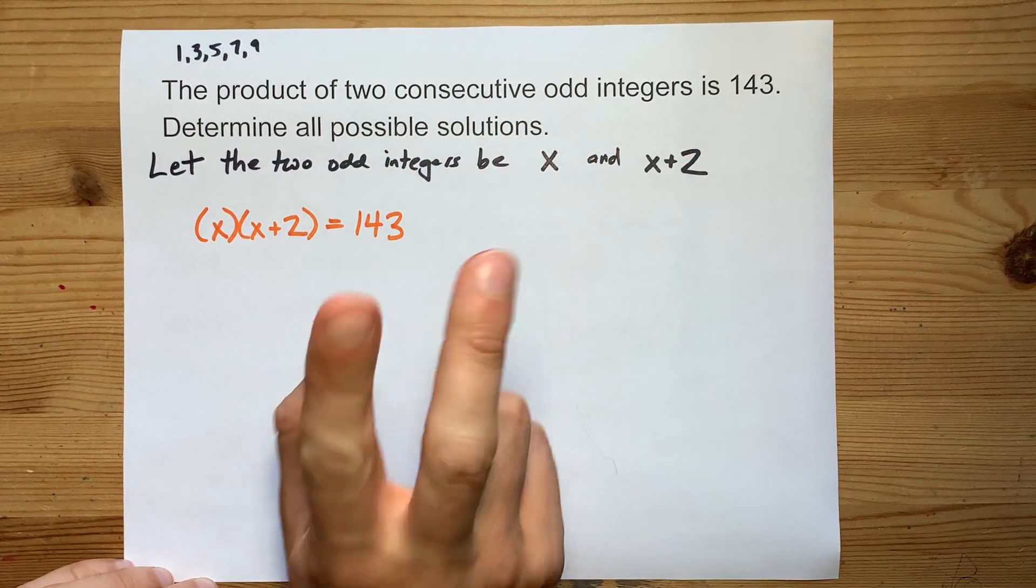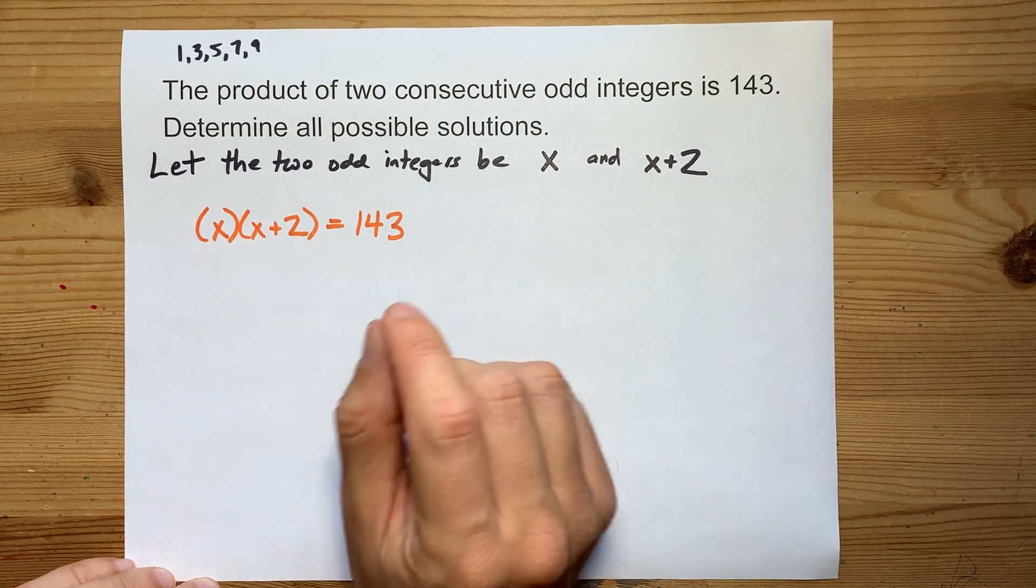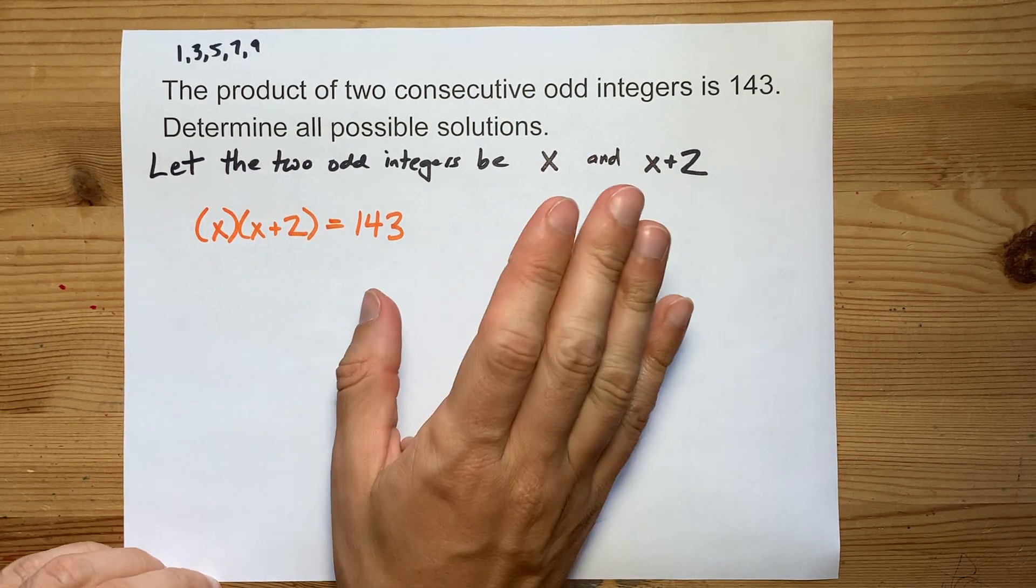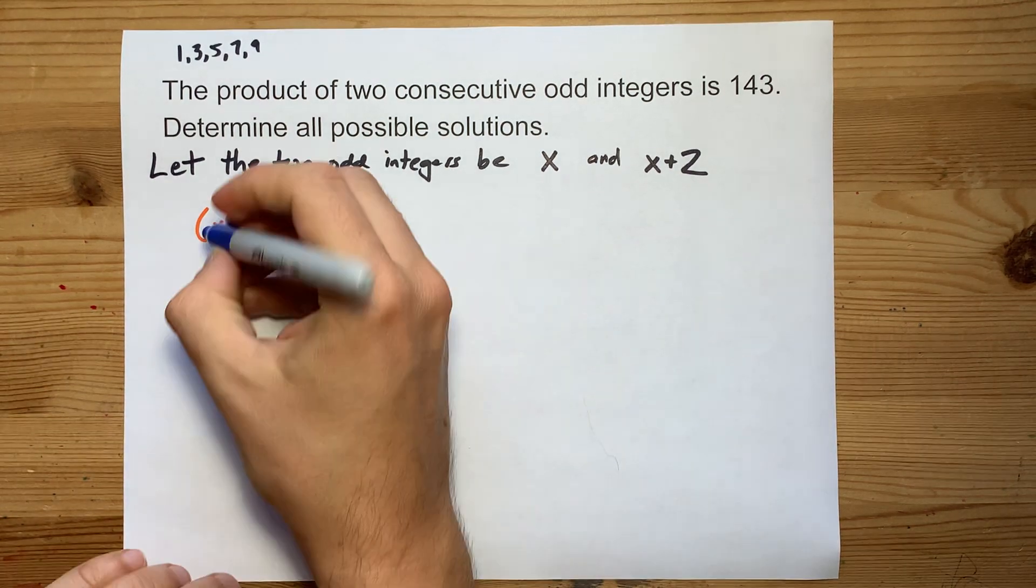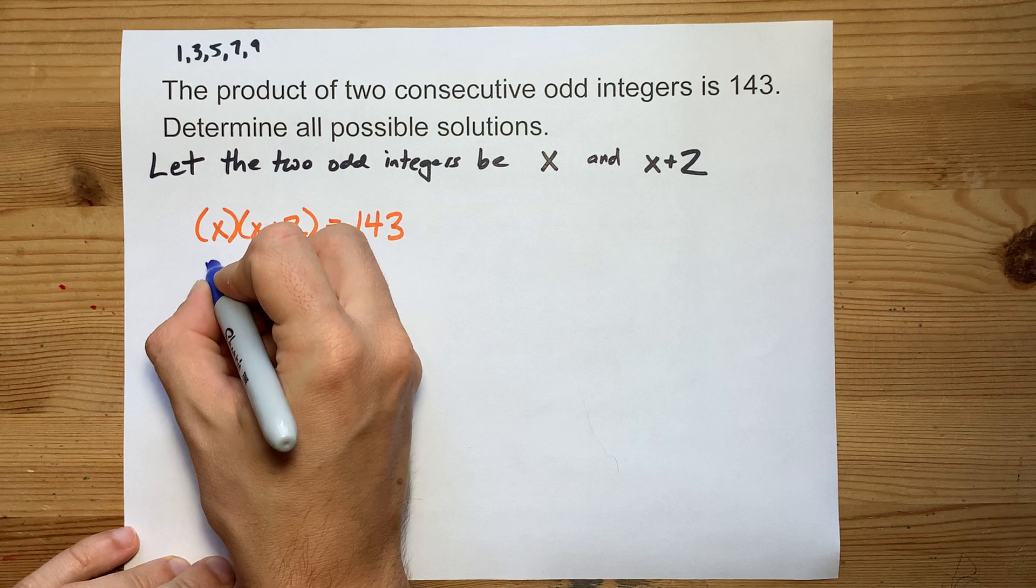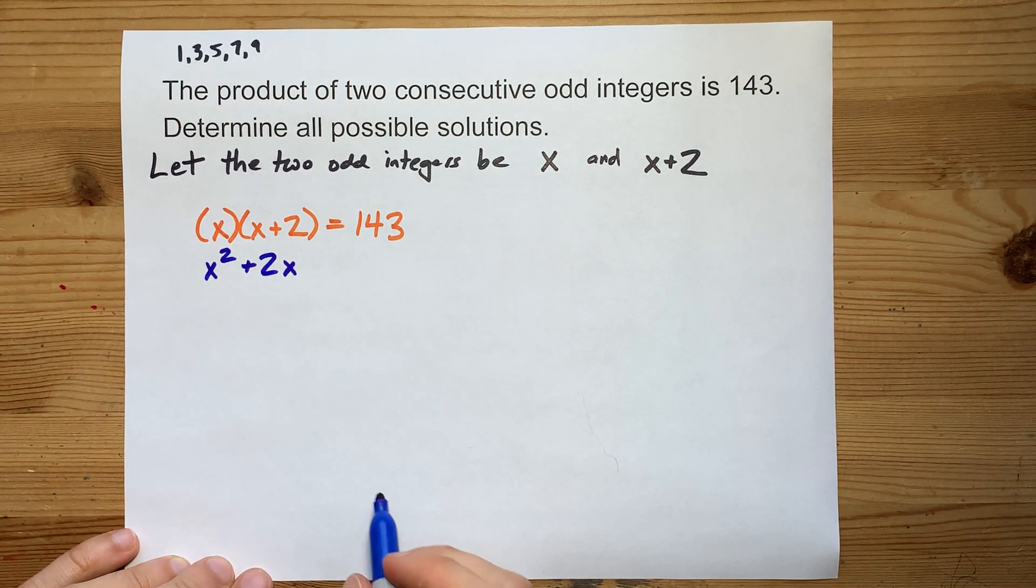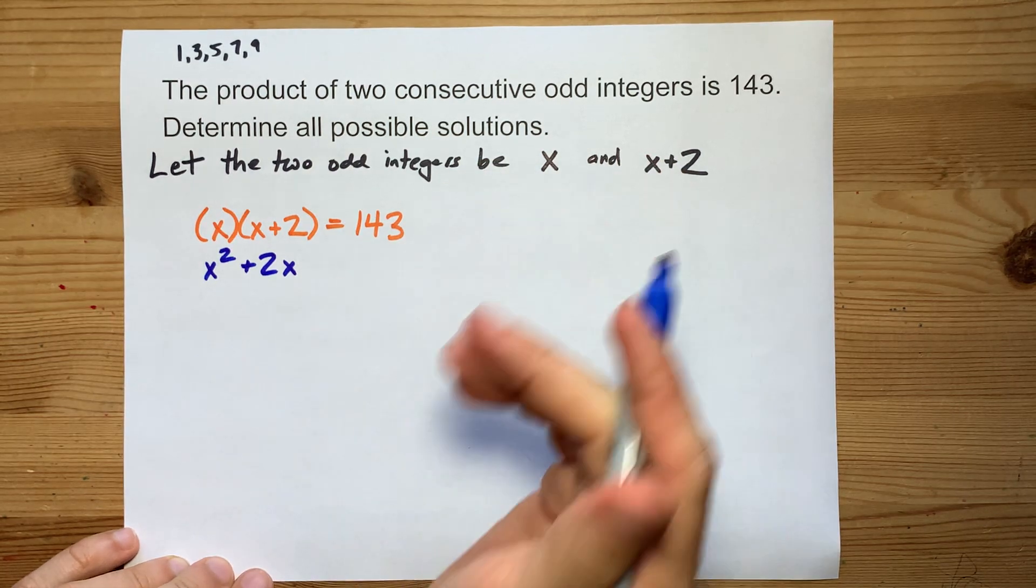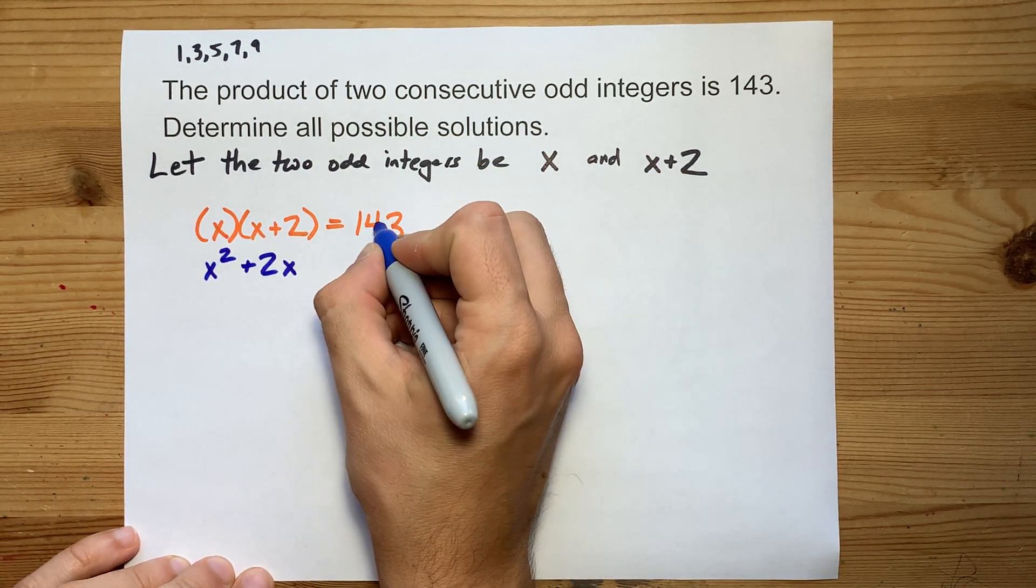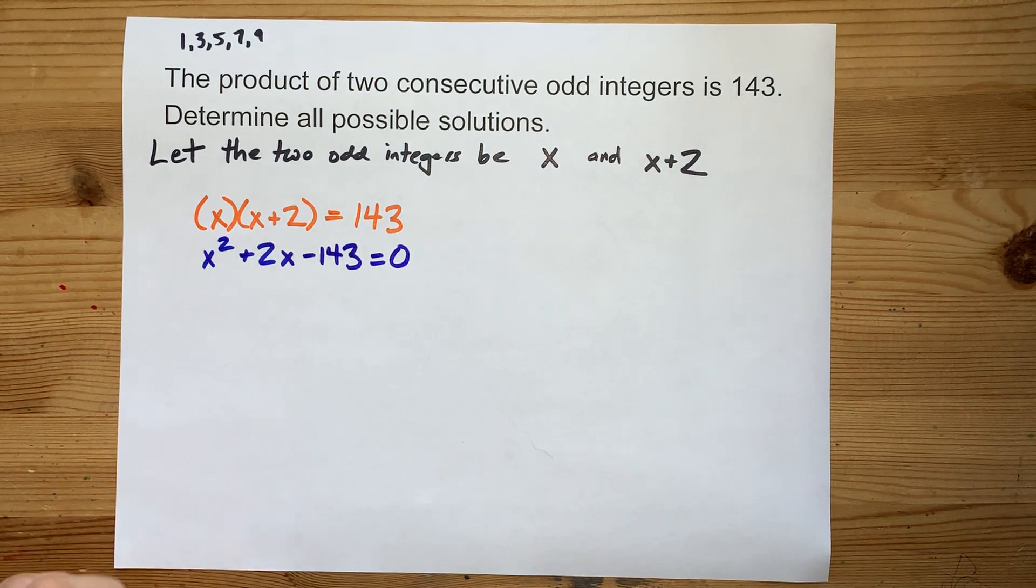Quadratic equations, and I know this is going to be quadratic because I've got an x times an x, are always easier to solve when one side equals zero. So I'm going to distribute the x through the brackets. I get x squared plus 2x there. And just because I'm flexing, I'm going to move the 143 to the other side at the same time. There we go.